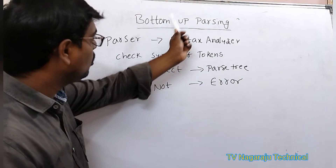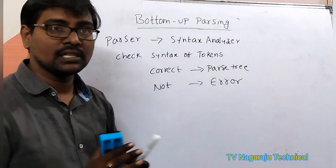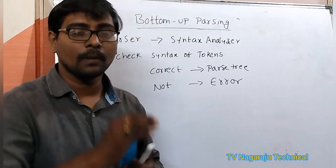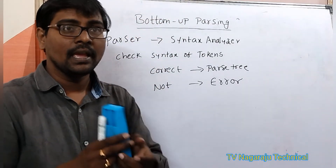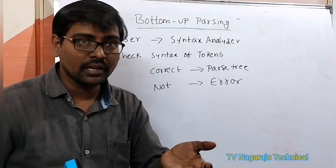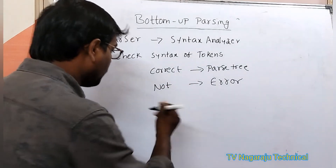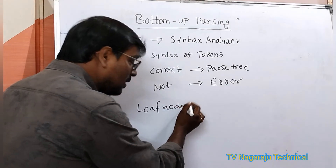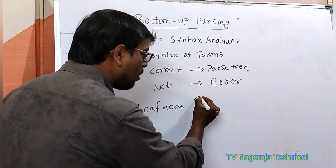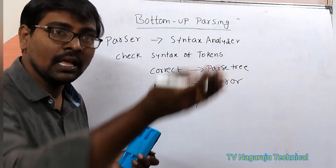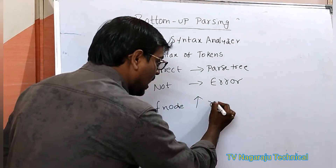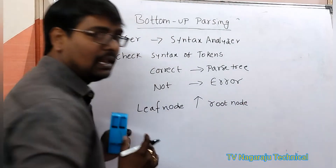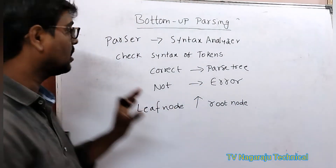Now coming to bottom-up parsing — the name specifies we are moving in the bottom-to-top direction. A parse tree is generated starting from the leaf node, moving in the upward direction until we reach the root node. This is the general scenario.